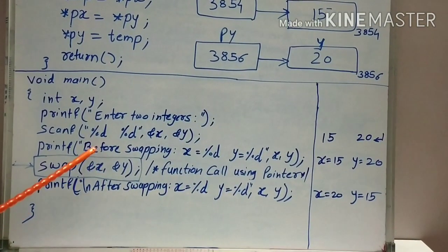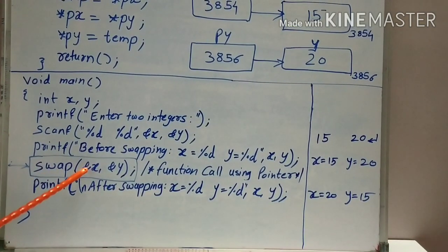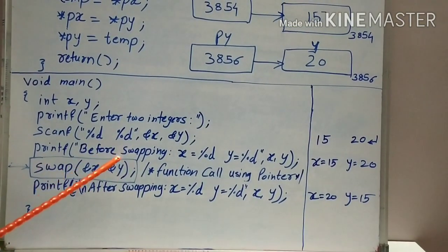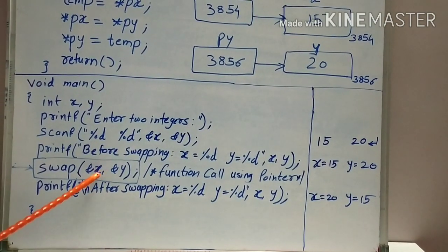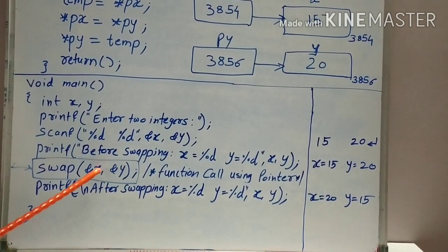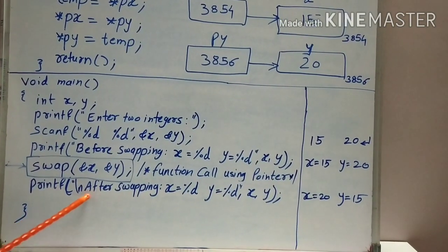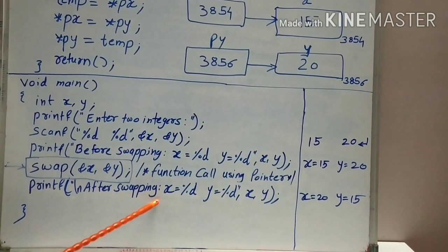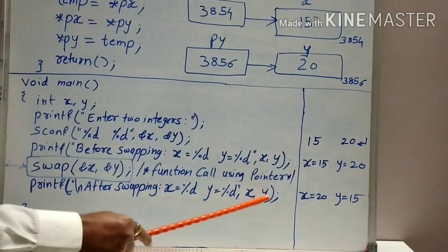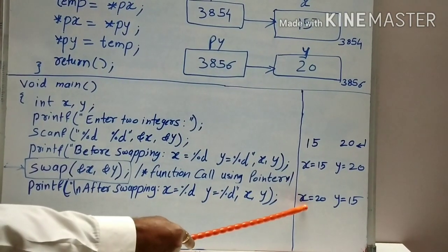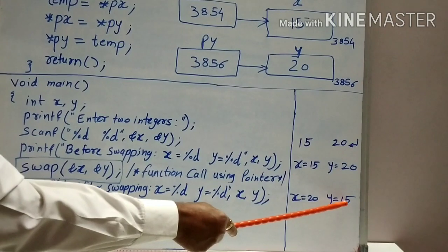The address of variable X and address of variable Y is passed to the swap function. The swap function will be called and the values of variable X and Y will be swapped. After that, I will display the values after swapping. I will get the value of X as 20 and value of Y as 15.